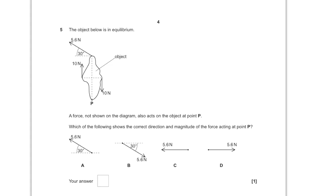For question number five, we've been given an object which is in equilibrium. A force not shown on the diagram also acts on the object at point P. We can see that the 10 newtons of force is balanced by a downward force of 10 newtons. Hence I'm going to go for B as my option, which will clearly balance out the force of 5.6 newtons acting at 30 degrees, with 5.6 acting in the opposite direction.